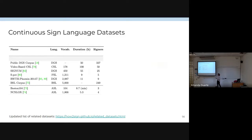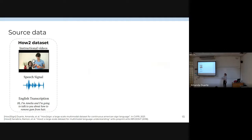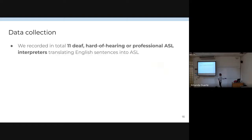Here in this table you can see that we had very limited datasets available when we started this project. When we began this dissertation and wanted to work with sign language, there was no data available for ASL sufficient to train machine learning models. We decided to collect this dataset, building on top of an existing multimodal dataset called How-To, which consists of several hours of instructional videos from YouTube. We used these videos as our source language — English — and with the help of 11 American Sign Language signers, we collected translations in ASL from the English sentences and subtitles of those videos.